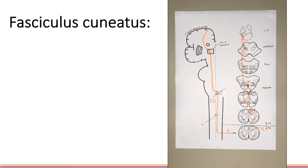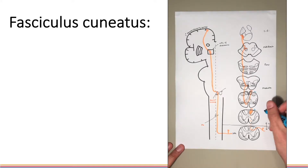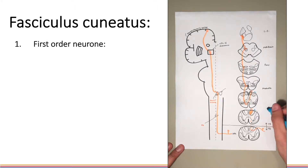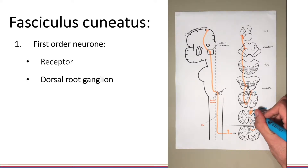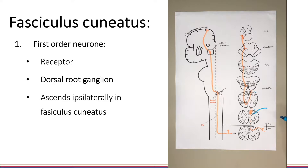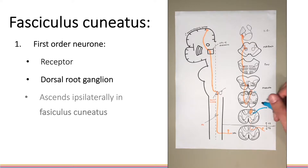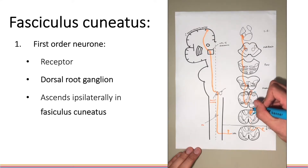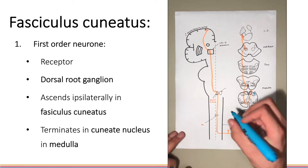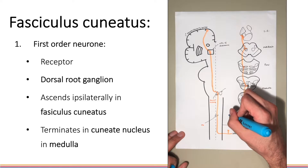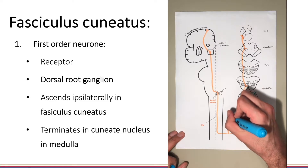Now we'll look at the fasciculus cuneatus which serves the upper body above T6. Again, the first order neuron from the receptor which enters at the dorsal root ganglion ascends ipsilaterally in the cord, this time in the fasciculus cuneatus. This first order neuron terminates in the cuneate nucleus, again at the junction of the open and closed medulla, just lateral to the gracile nucleus.